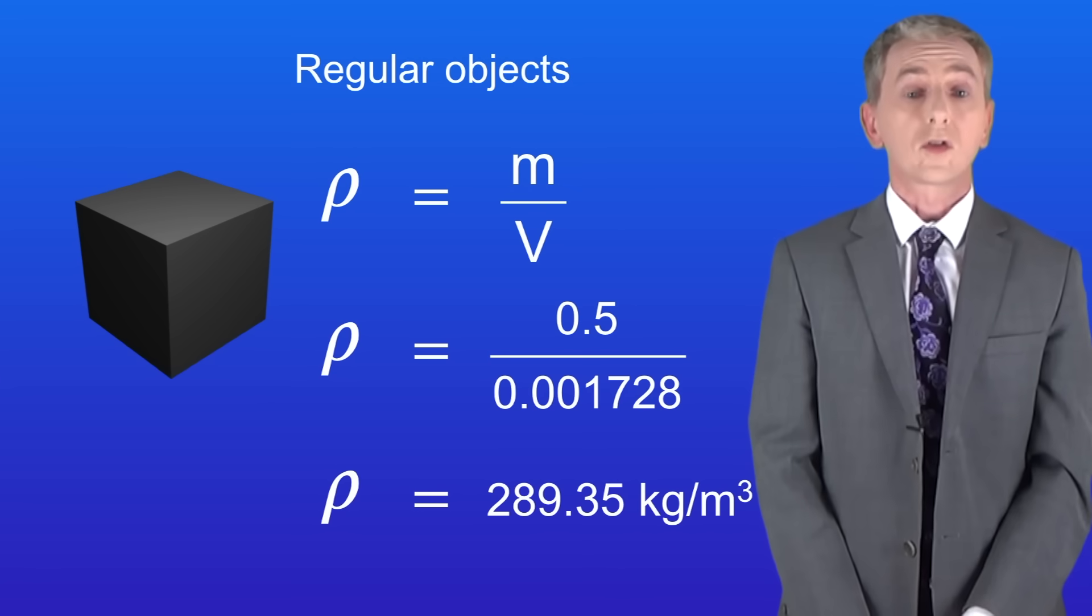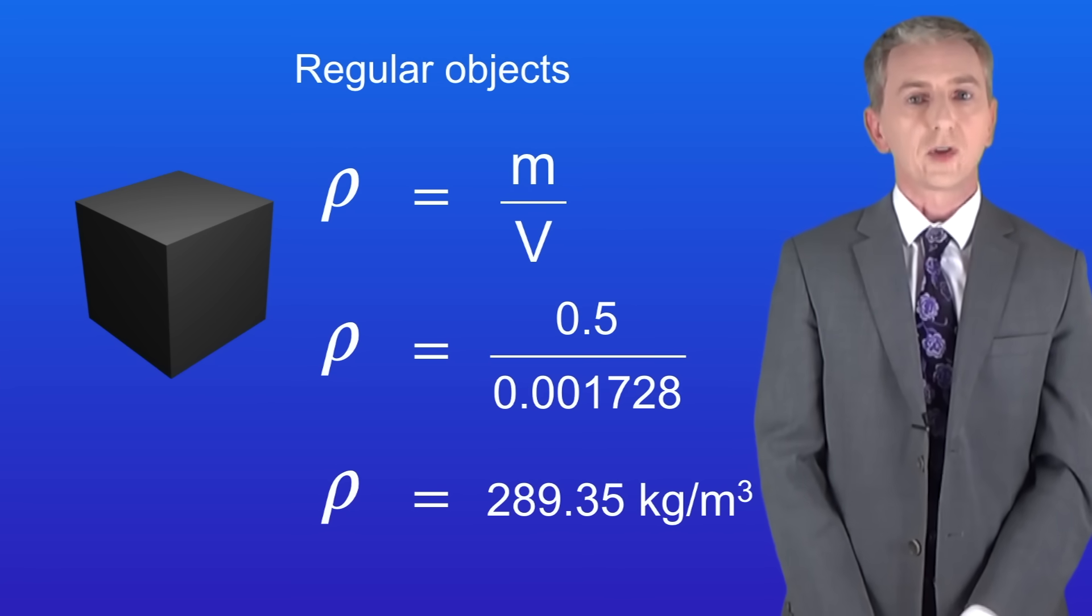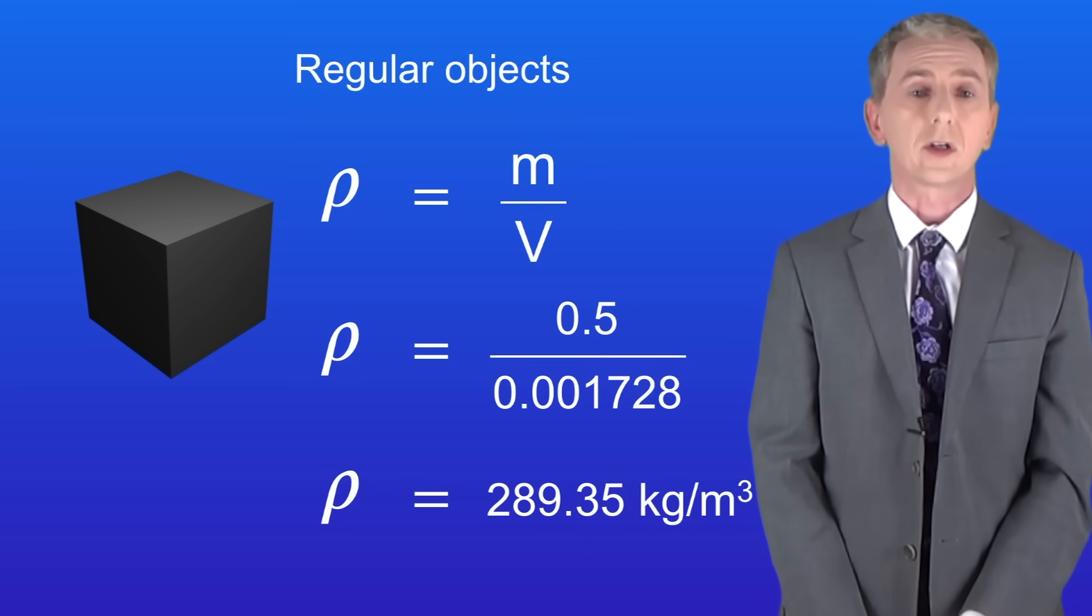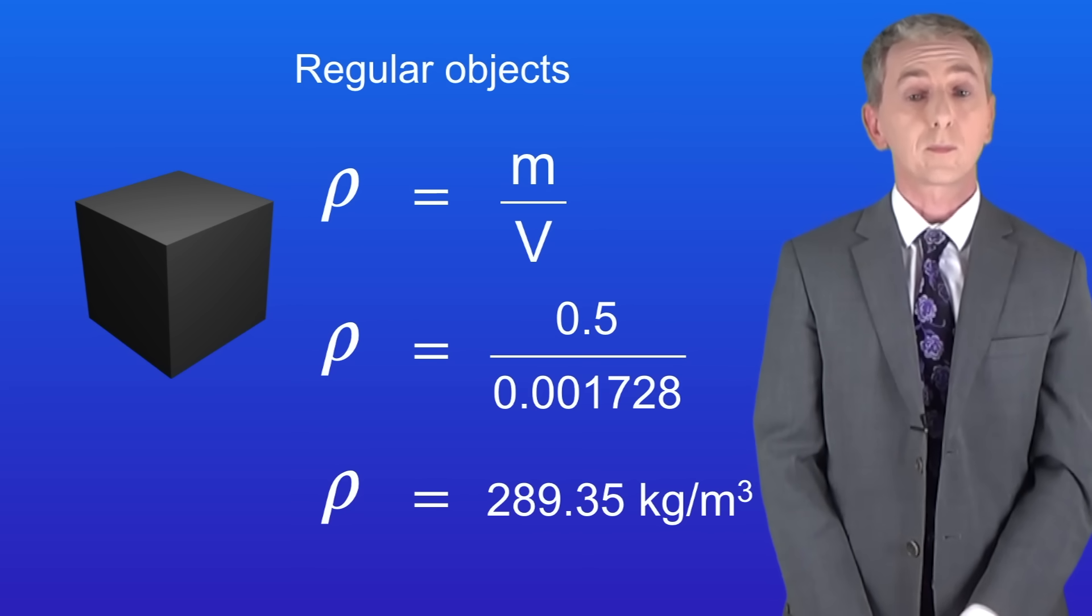But what about an irregular object such as the vase we saw before? In the case of irregular objects we cannot easily measure the dimensions. Instead we determine the volume using a method called displacement. So let's look at this now.